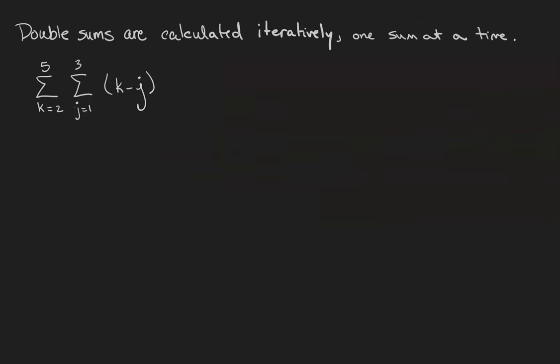It's pretty common in computer science contexts to see double sums. Double sums are calculated one sum at a time. When a sum is rectangular like this one, we can work either from the outside in or from the inside out. What's important is that neither index depends on the other one.